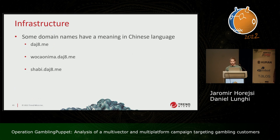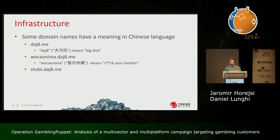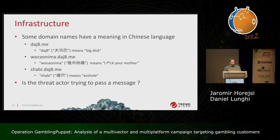A quick note about the domain names: if you translate them or ask Chinese-speaking colleagues, you find that one means 'big dick,' another means 'I f*** your mother,' and 'shabby' means 'asshole.' We were wondering if the threat actor is trying to pass some kind of message — we don't really know the purpose. Maybe it's a frustrated teenager. But it was quite funny to find this out.